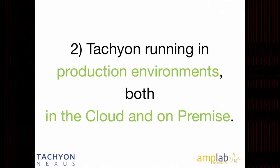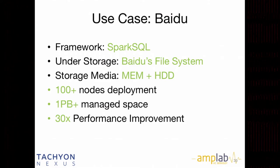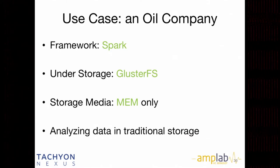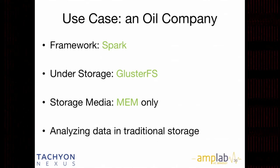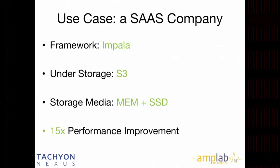Let's talk about Tachyon running in production environments, both in the cloud and on-premise. I already mentioned the Baidu case. Here's another: a leading oil company runs Spark on top of Tachyon, and Tachyon on top of GlusterFS — they use GlusterFS in a lot of scientific computing. They use Tachyon to manage memory only, bridging new workloads to their traditional data so they can analyze data in traditional storage. Another case is a SaaS company that runs Impala on top of Tachyon, using Tachyon to load data from Amazon S3, managing both memory and SSD, with around 15 times performance improvement.